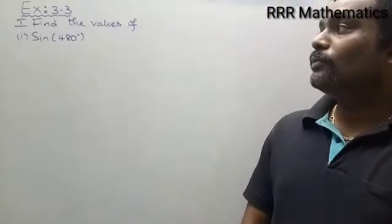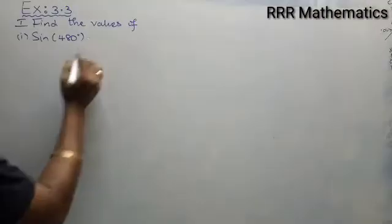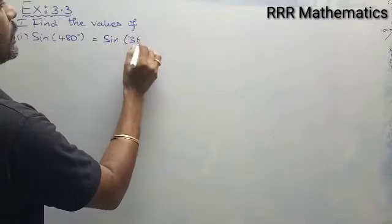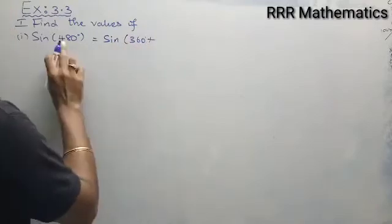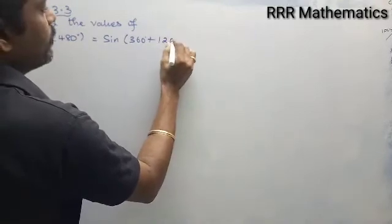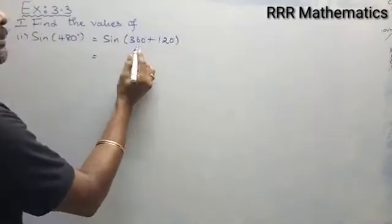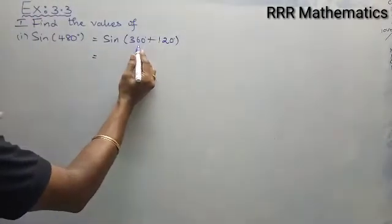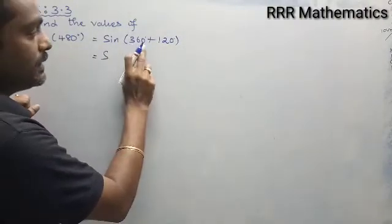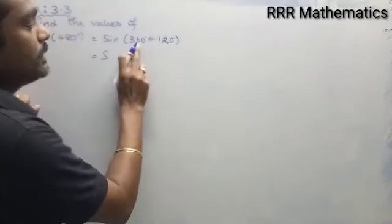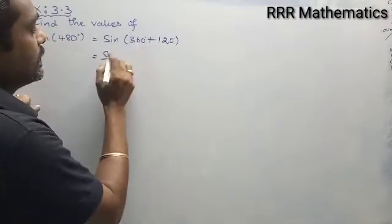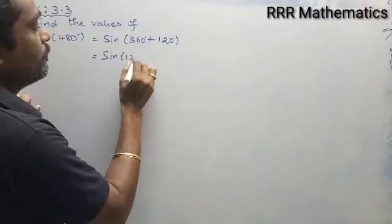Find the value of sine 480 degree, which can be written as sine of a multiple of 360 plus the remainder. How many 360s? Only 1 — so 360 plus the remainder 120. A multiple of 360 is considered as 0 degree, so sine 480 degree can be written as sine 360 plus 120, which simplifies to sine 120 degree.